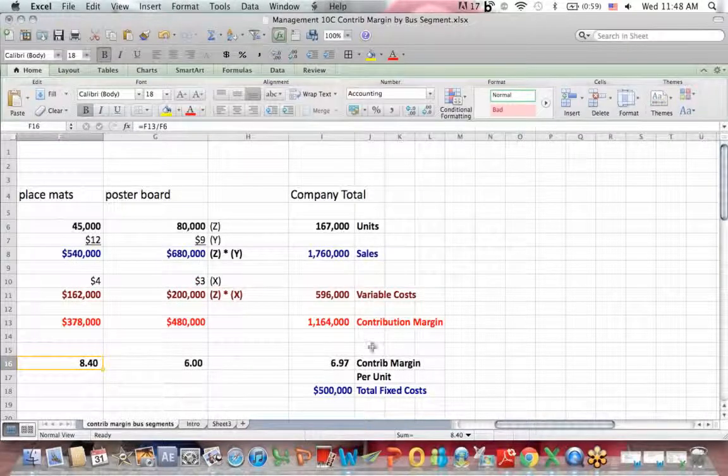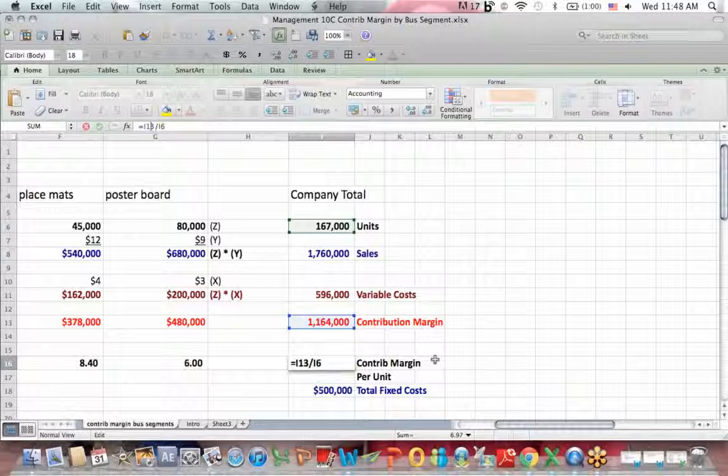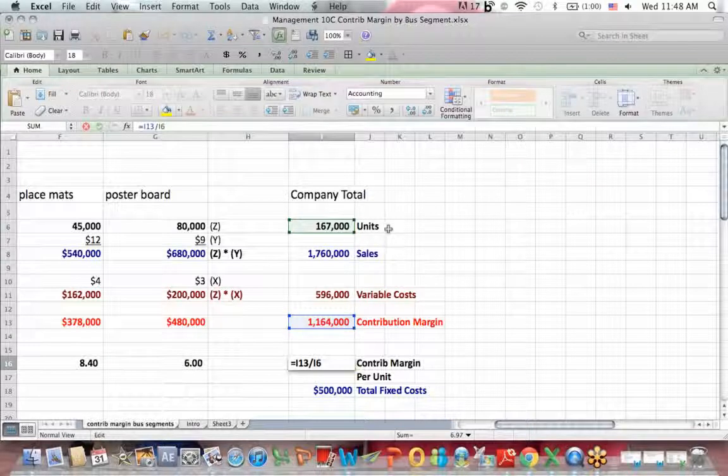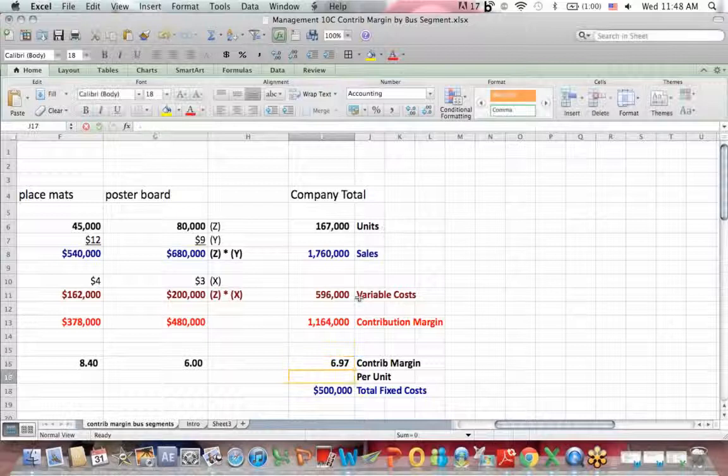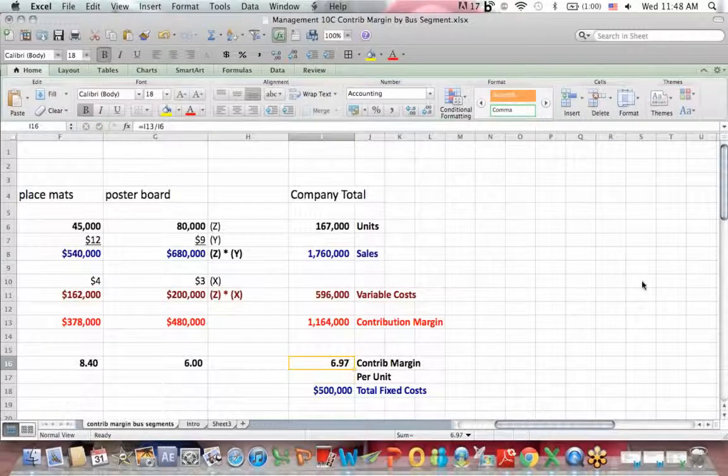If I go to the total column, I do an average of all the four contribution margins by taking total units for the whole company. And I take contribution margin in dollars for the whole company divided by 167,000 units to get a contribution margin per unit for the whole company.